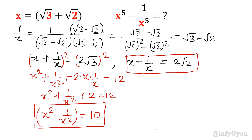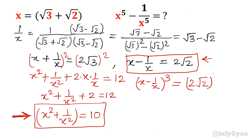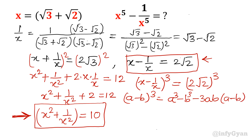Now let us find out x power 5 minus 1 over x power 5. This will come from x squared multiplied with x cubed. So now our target is to find out x cubed. I am going to take the cube of x minus 1 over x. So it will be (2 root 2) cubed. The formula for (a - b)³ is a³ minus b³ minus 3ab(a - b).